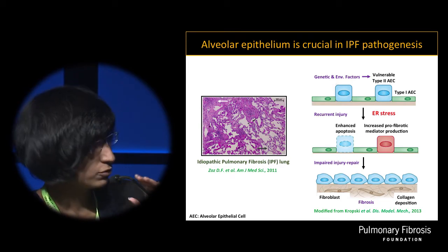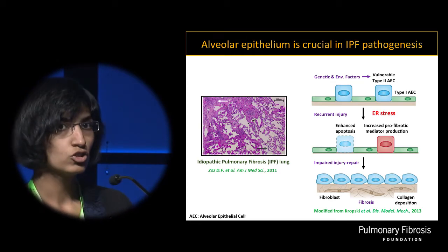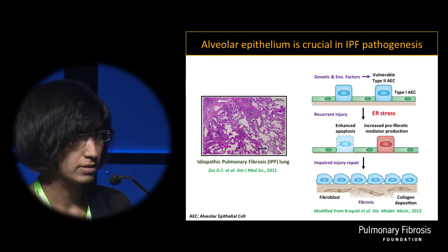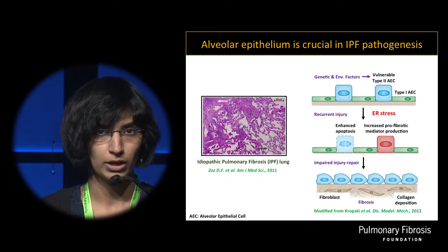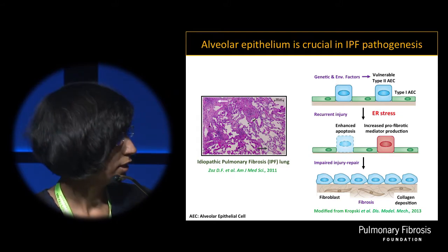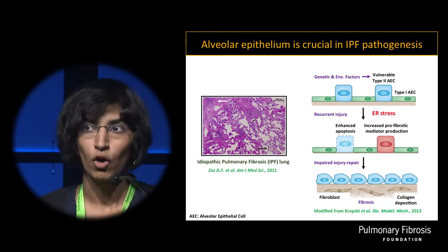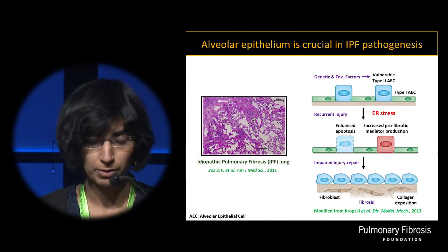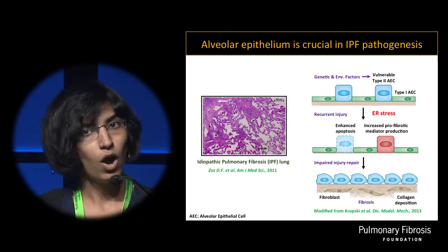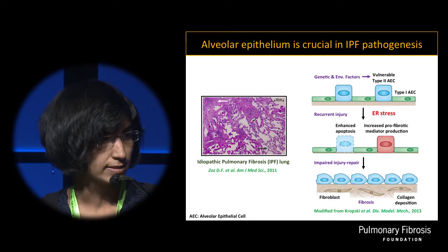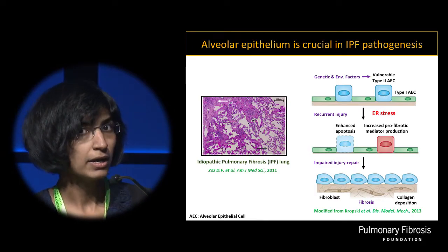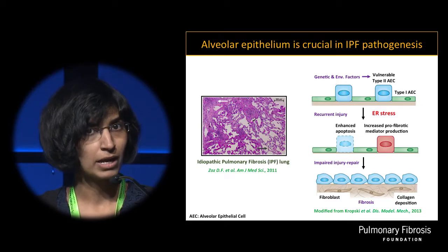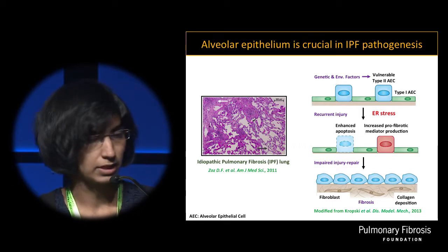A number of genetic and environmental factors can lead to a vulnerable type 2 AEC phenotype. When these cells are faced with a recurrent or chronic injury, they can exhibit an abnormal phenotype, such as undergoing increased apoptosis or increased production of profibrotic mediators. Ongoing dysfunction of this sort can lead to impaired injury repair cycles, abnormal fibroblast activation, matrix deposition, and ultimately progressive fibrosis.